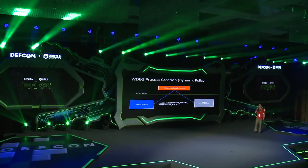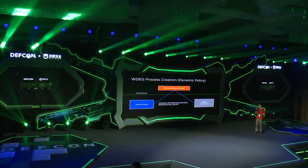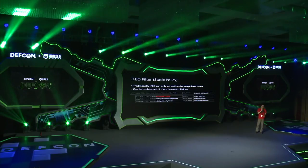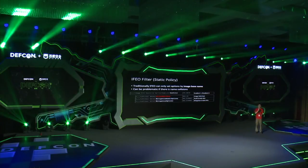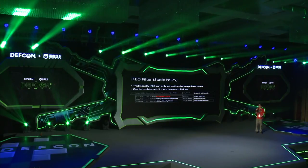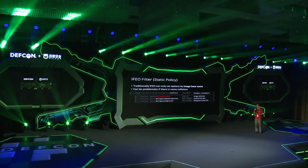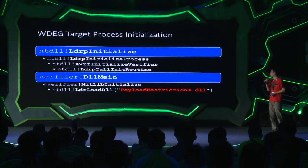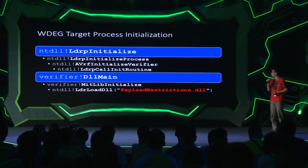Exploit Guard can be enabled both dynamically or statically. For dynamic enablement, the source process passes a payload restriction policy structure to the NTOS kernel. For static enablement, there's image file execution options. Microsoft introduced a new feature called IFEO filter — traditionally IFEO can only set options by image base name, but by using IFEO filter we can specify a full path for the executable to enable certain mitigation policies. Exploit Guard is enabled via an undocumented feature called verifier hook.